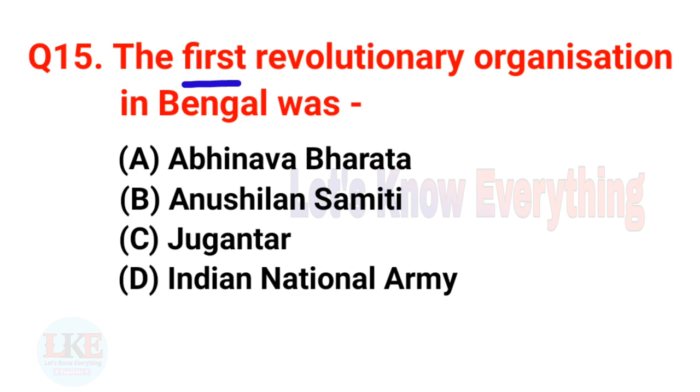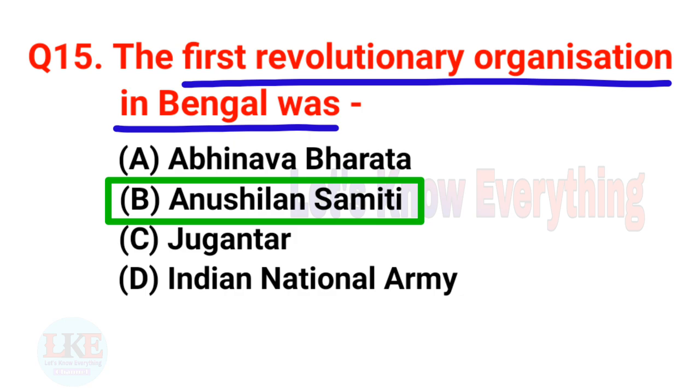Question number 15: The first revolutionary organization in Bengal was Anushilan Samithi.